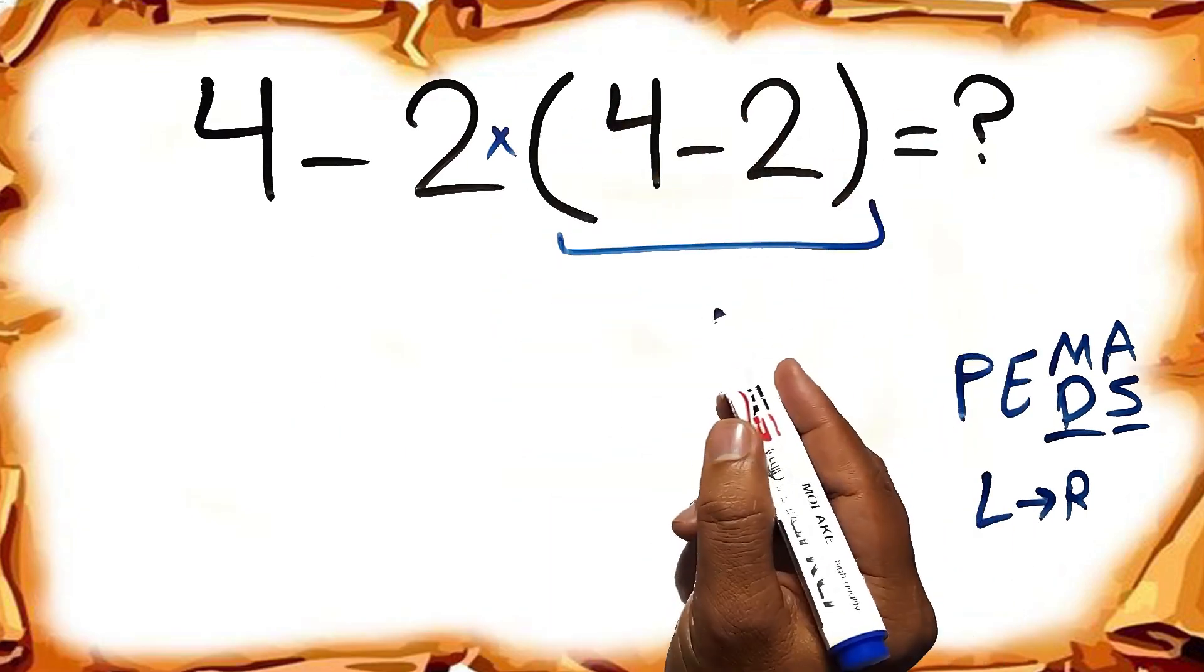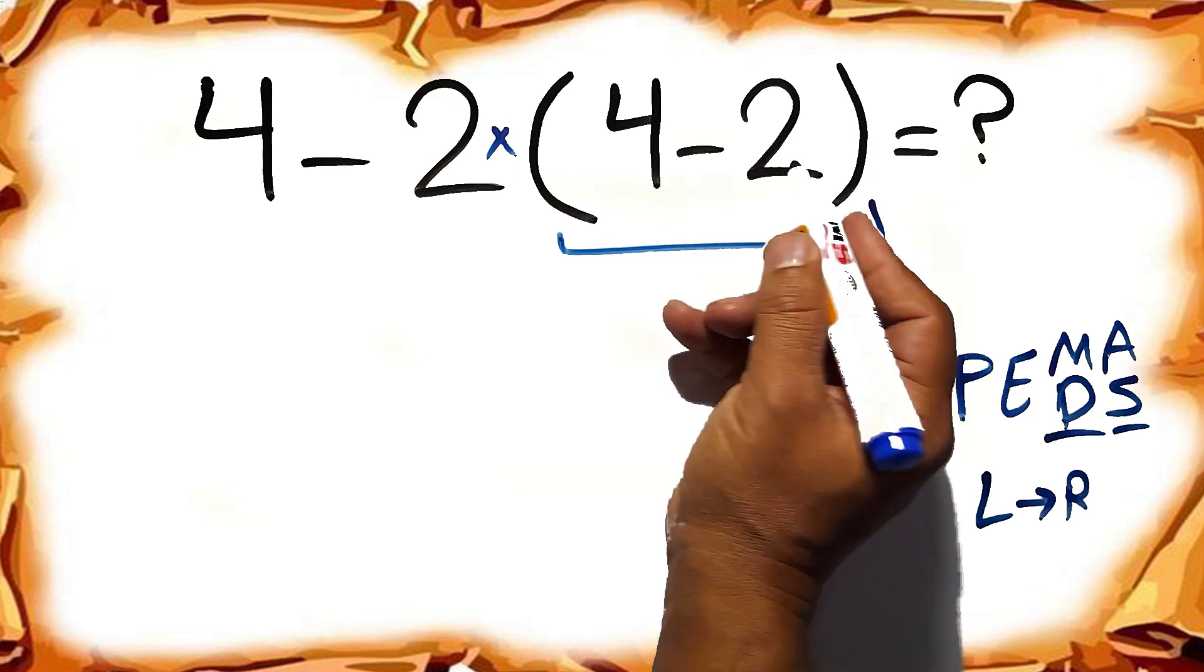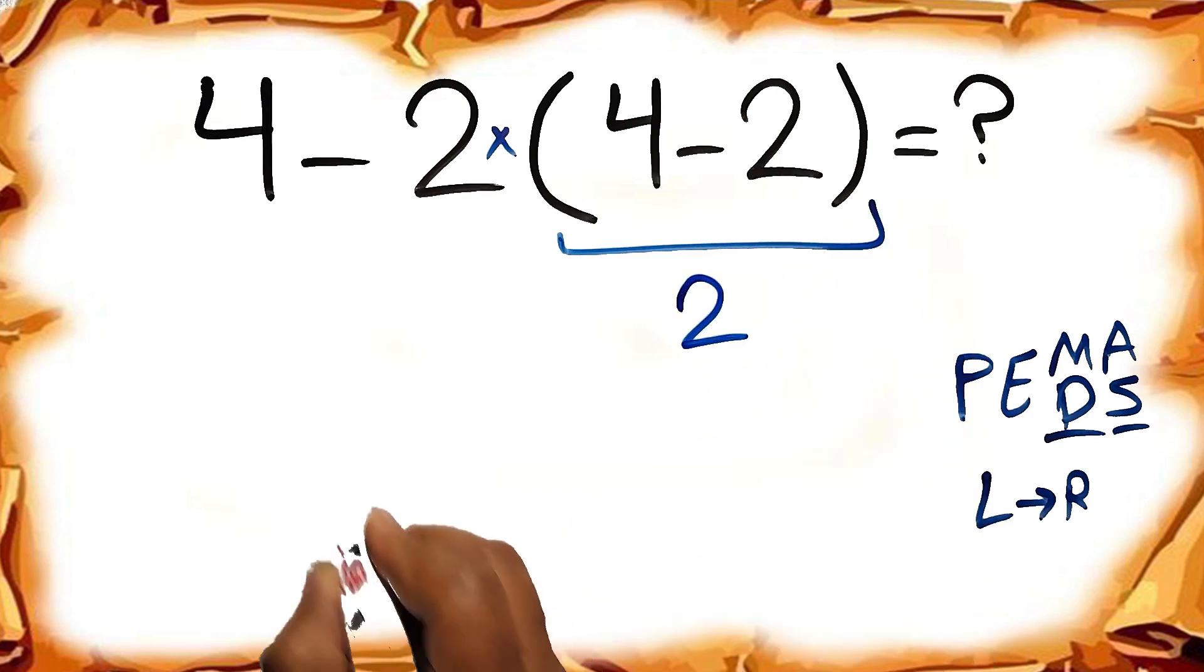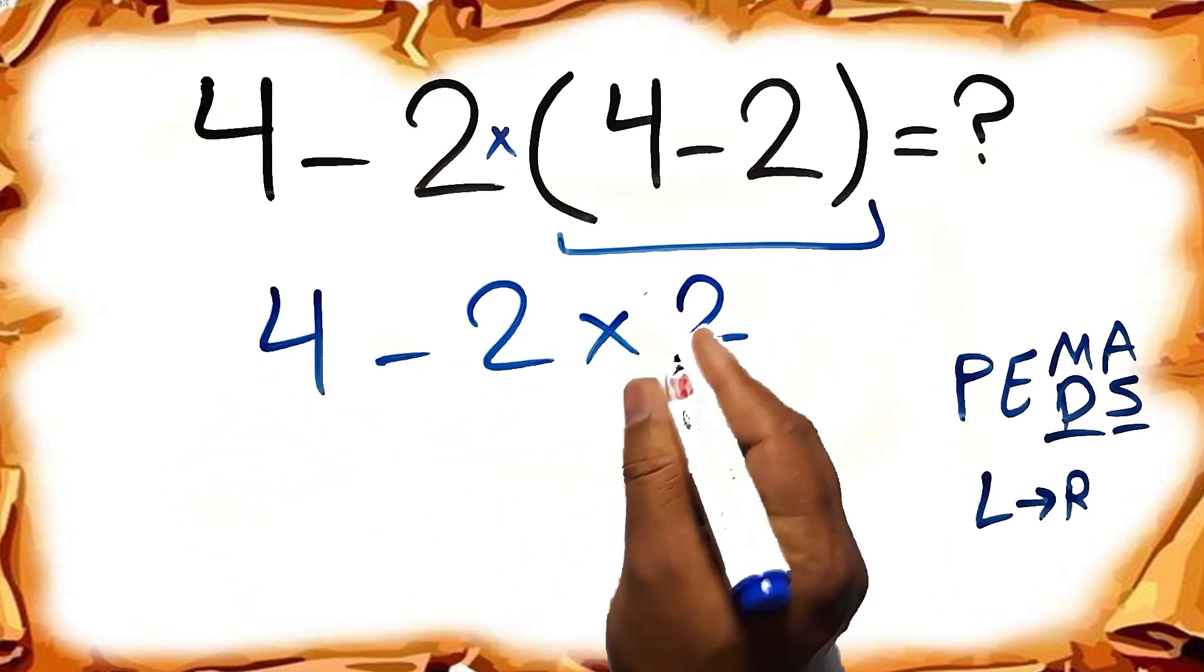So first we have to do this parenthesis. Inside this parenthesis we have 4 minus 2, which gives us 2. So 4 minus 2 times 2.